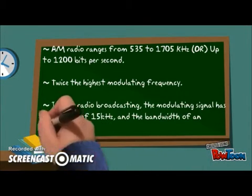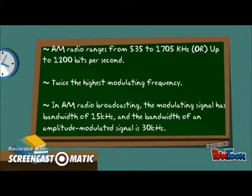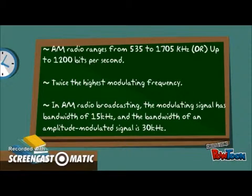The frequency range for AM radio ranges from 535 to 1705 kHz, or up to 1200 bits per second. For the bandwidth requirement, it is twice the highest modulating frequency. In AM radio broadcasting, the modulating signal has a bandwidth of 15 kHz, and hence the bandwidth of an amplitude modulated signal is 30 kHz.